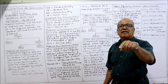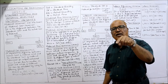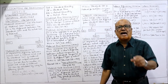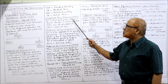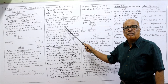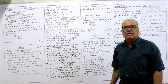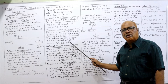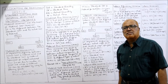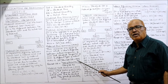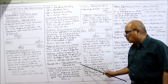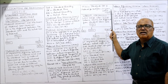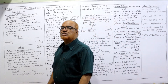To recap all five material variance formulas: MCV = (SQ × SP) − (AQ × AP). MPV = AQ × (SP − AP). MUV = SP × (SQ − AQ). MMV = SP × (Revised SQ − AQ), where Revised SQ = (Total Actual Mix ÷ Total Standard Mix) × SQ. MYV = Standard Cost of Material per Unit × (Actual Yield − Standard Yield from Actual Input). These are all five formulas for material variances.